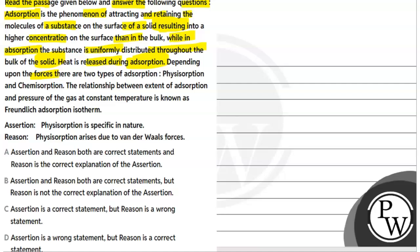Depending upon the forces, there are two types of adsorption: physisorption and chemisorption. The relationship between extent of adsorption and pressure of a gas at constant temperature is known as the Freundlich adsorption isotherm.